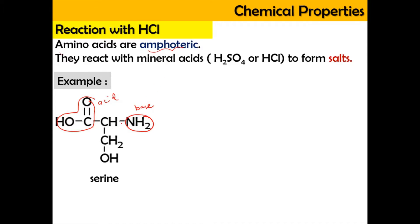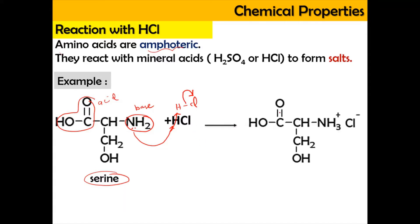Due to these properties, the amino acid — for example serine, which is the common name — when it reacts with the mineral acid HCl, the base here is going to take the hydrogen from HCl, breaking the bond. Two electrons are transferred to the more electronegative atom which is the Cl. As the product of the reaction, the NH2 group is protonated because the nitrogen takes up hydrogen to become NH3+, and the Cl− is going to be close by to the positive charge of the nitrogen.